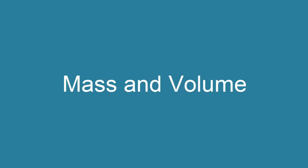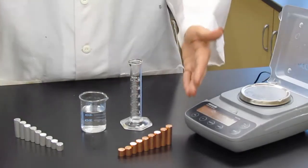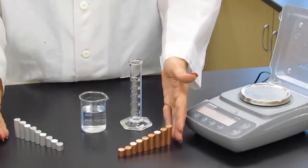This is the video procedure for the mass and volume lab. First thing you're going to need to do is obtain sets of cylinders, one of aluminum and one of copper.